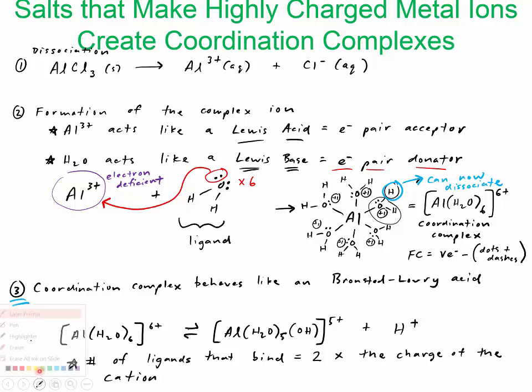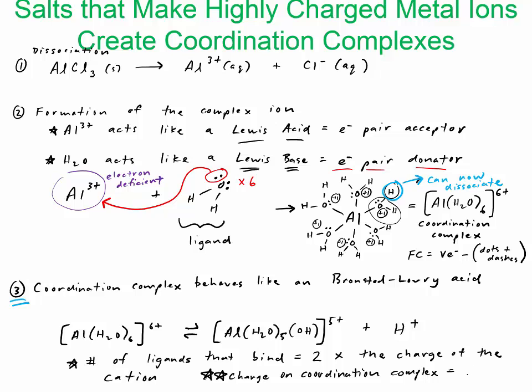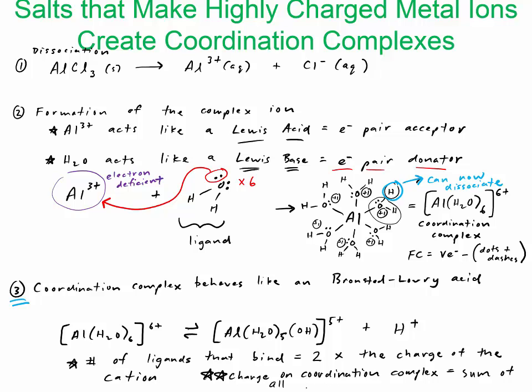The second thing you'll need to know is, so that's point number one actually, just put star. And then two stars, the other thing to know about this is the charge on the overall species is, let's see, is the sum of all the formal charges. So the charge of all the formal charges on the coordination complex is the sum of all the formal charges.